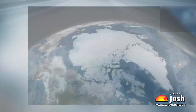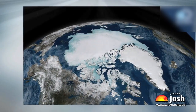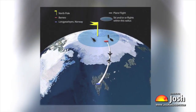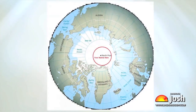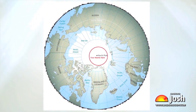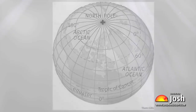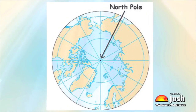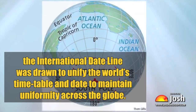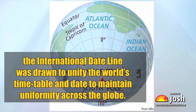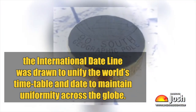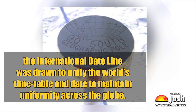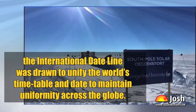In other words, if a traveller is crossing the date line from east to west, he or she loses a day, and while crossing the date line from west to east, he or she gains a day. But if it happens on the same landmass, then the same place would have a different date on the same day. Therefore, the international date line was drawn to unify the world's timetable and maintain uniformity across the globe.